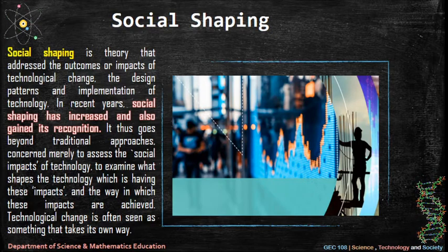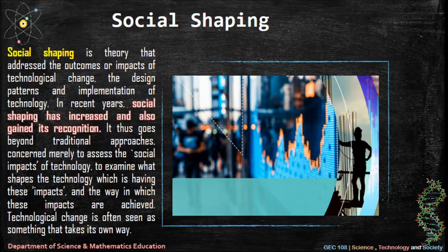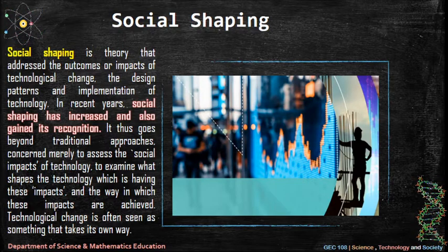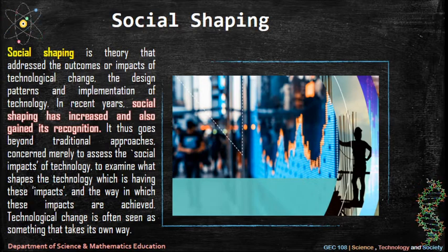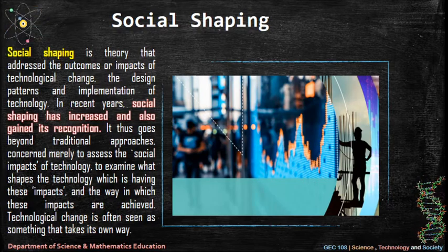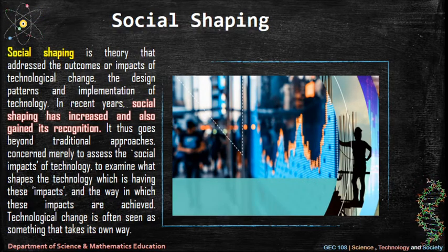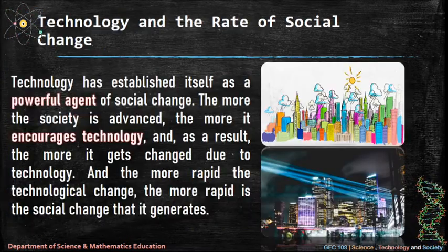Social shaping is a theory that addresses the outcomes or impacts of technological change, the design patterns and implementation of technology. In recent years, social shaping has increased and gained recognition. It goes beyond traditional approaches concerned merely to assess the backward social impacts of technology, to examine what shapes the technology which is having these impacts and the way in which these impacts are achieved.